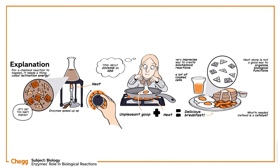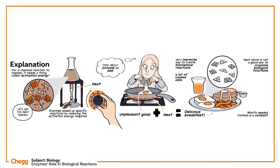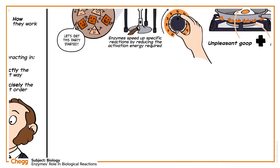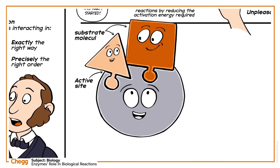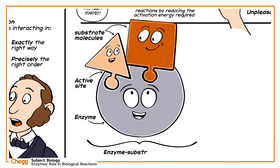Enzymes speed up specific reactions by reducing the activation energy required for those molecules to react. They do this by having what's called an active site that the substrate molecules can fit into, like puzzle pieces. When the enzyme and a substrate fit together, they form an enzyme-substrate complex, and it's this set of interactions that reduces the activation energy.